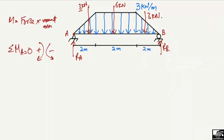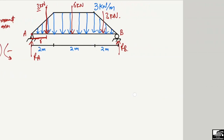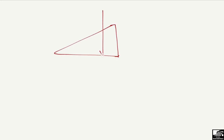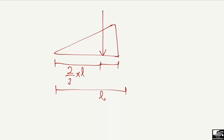The 3 kN load acts at the centroid of the first triangle. For a triangle, the centroid is located at two-thirds of the total length from the apex (the thin end) and one-third from the base. So the centroid is always at two-thirds of L from one side and one-third of L from the other. In our case, the moment arm from A is two-thirds of 2 meters.